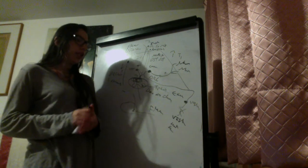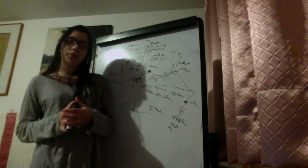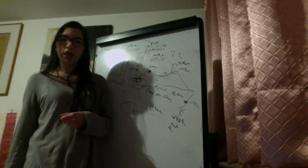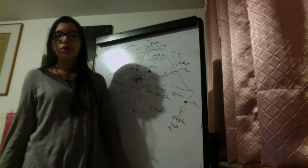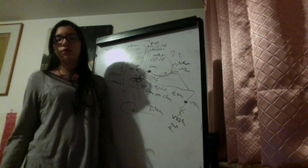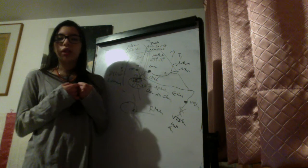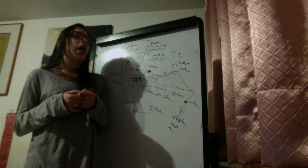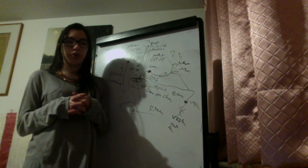In summary: the decerebrate posture results from damage below the red nuclei and presents as an extensor posture. The decorticate posture results from damage above the red nuclei and presents as flexion of the upper limbs only — this is called the decorticate posture.